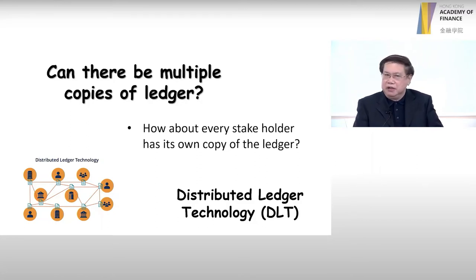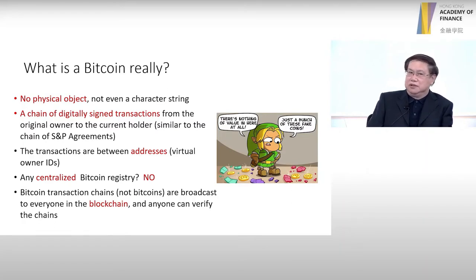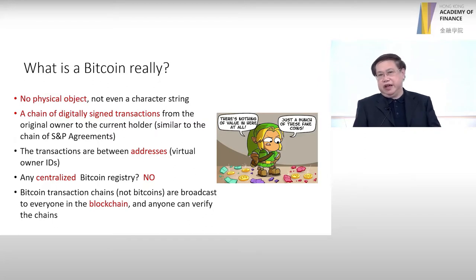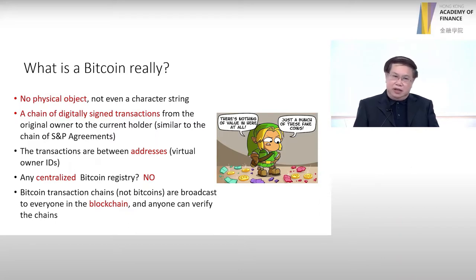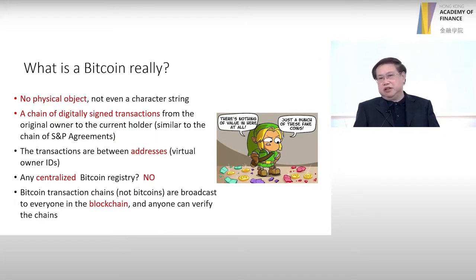So what is Bitcoin really? Number one, Bitcoin is not a coin. It's not even a character string. It's actually a chain of digitally signed transactions, just like this chain of title in property. So if you have a Bitcoin, that means somebody gave you a Bitcoin, and somebody gave you a Bitcoin means somebody received a Bitcoin from another person, and so on. It's just a chain of transactions. We don't really see a physical coin or even a data file.